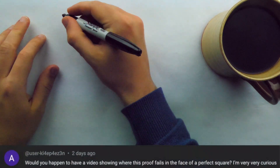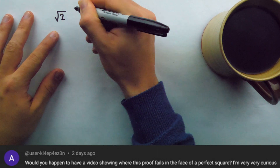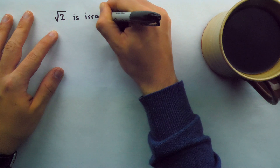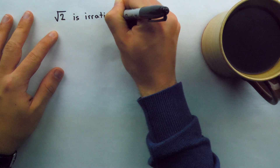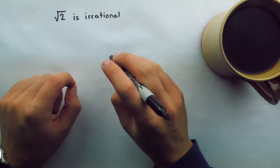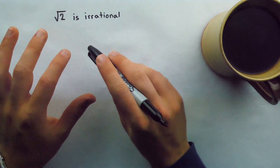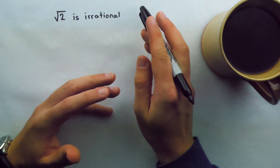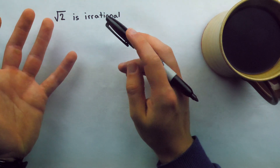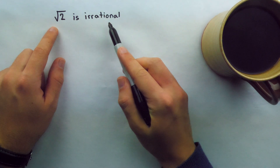Here's what we're doing today. We're going to go over one of the most famous proofs in the world — that the square root of 2 is irrational. Then we're going to see where this proof fails when we try to prove that the square root of 4 is irrational, which will help clarify the proof when we see how it fails to prove something irrational when it isn't.